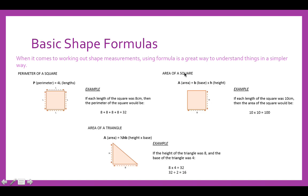If you were working out the area of the square, you would do the area times the base. So A times H for the height will give you your area. If each length of the square was 10 centimetres, then the area of the square would be 10 times 10, which would give you 100. Finally for area of a triangle, you would have A for area equals the half height times base. If the height of the triangle was 8 and the base of the triangle was 4, you would do 8 times 4 is 32, and then divide that by 2. Because 8 times 4 is 32, but that's working out a whole entire square. So you would need to divide that by 2, which would give you 16.